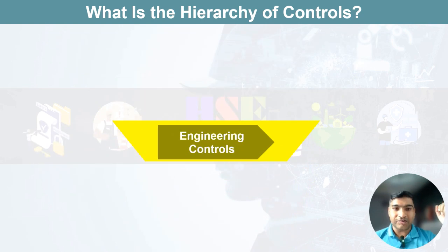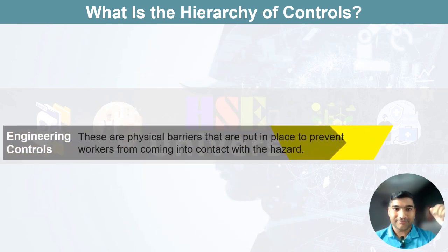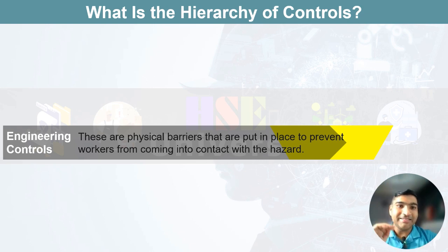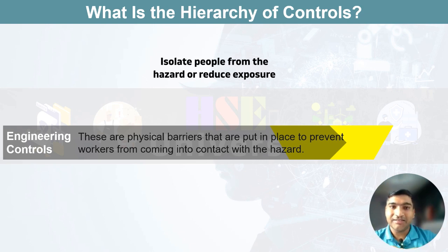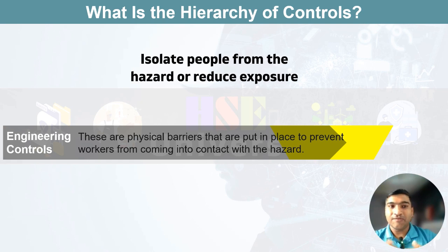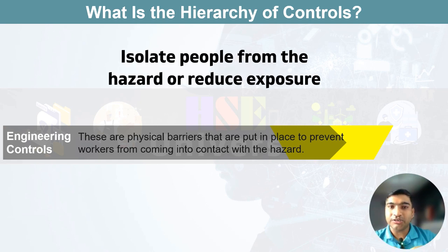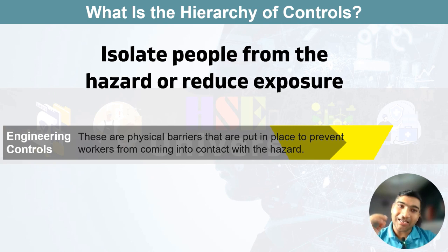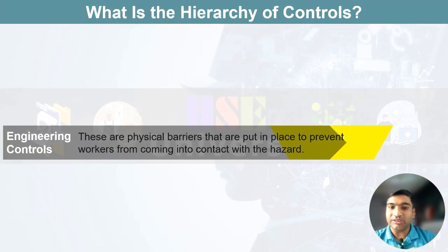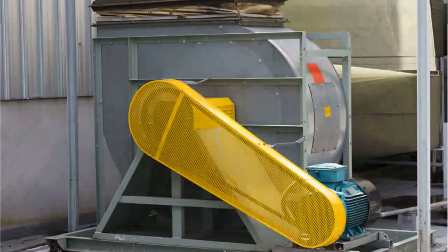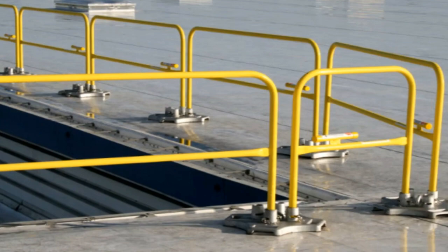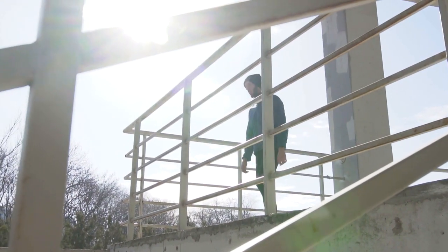Engineering controls come next. These are physical changes that isolate people from the hazard or reduce exposure, but still allow the crew to do their jobs. For example, installing machine guards to prevent contact with moving parts, or a guardrail system to prevent falling from height.